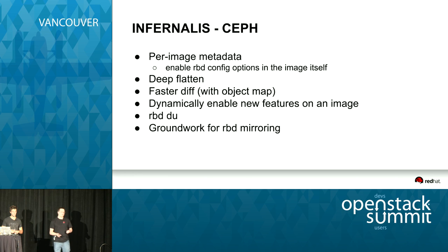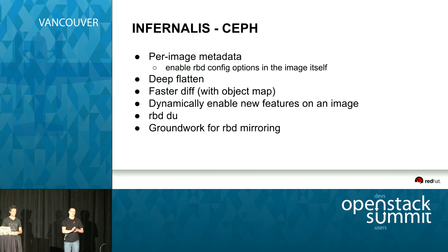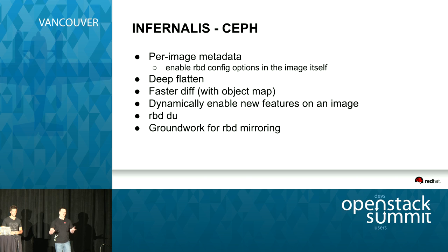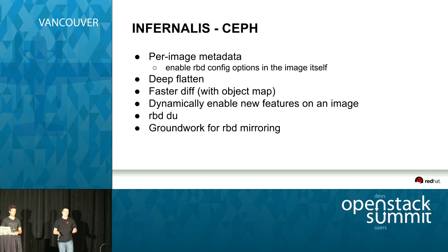Along with ObjectMap in Infernalis, there's another optimization to enable faster RBD diffs by keeping track of exactly between which snapshots objects changed. This also allows us to report what's changed in an image between snapshots, and what's changed between a parent and a clone. That's present in a new RBD du command, which shows how much disk space has been used by a given snapshot or image based on the ObjectMap — it can be computed very quickly by just looking at the metadata.